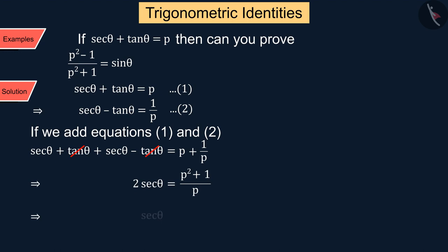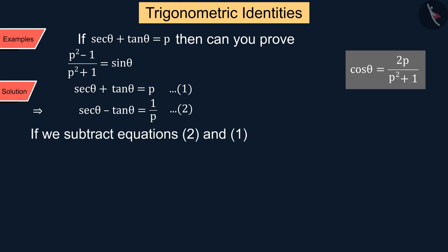...we get sec θ is equal to (p² + 1) upon 2p, which we can also write in this way. Since we know that cos θ equals 1 upon sec θ. Similarly, if we subtract equation (2) from equation (1), we get tan θ is equal to (p² - 1) upon 2p, where we change tan θ into sin θ upon cos θ.